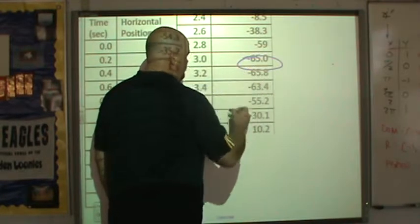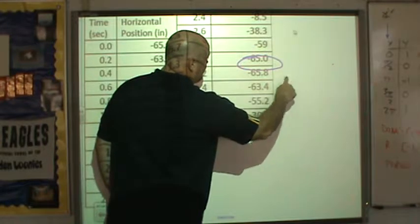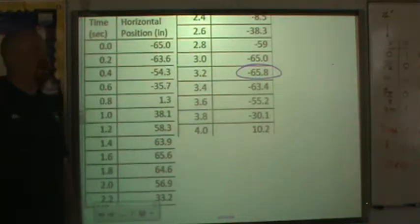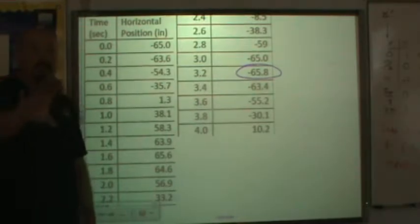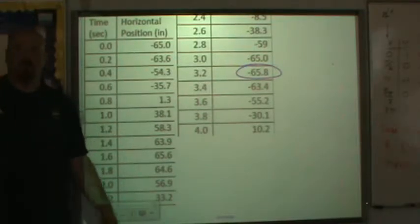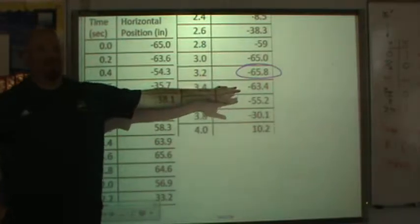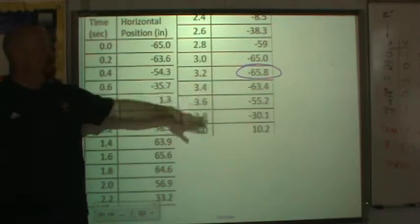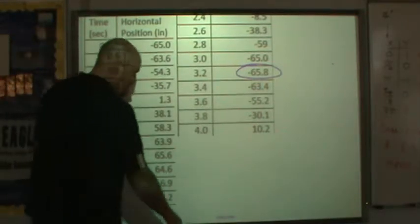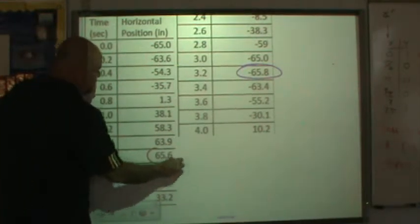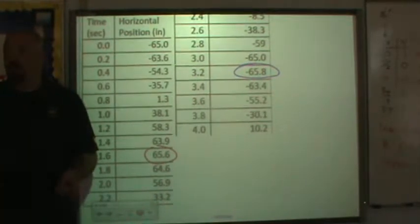Just look for the smallest value, the lowest value over here. Negative 65.8. The smart board knows when the camera's on. It's like it's playing a practical joke on me when I try to do something up here. So we know what our minimum value is. You can look for the maximum value in what's been given. The maximum value is over here, 65.6.